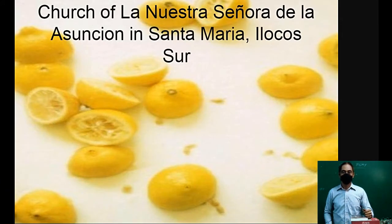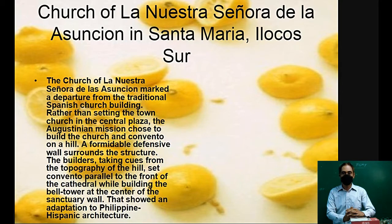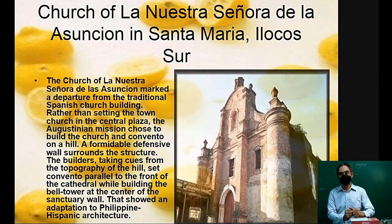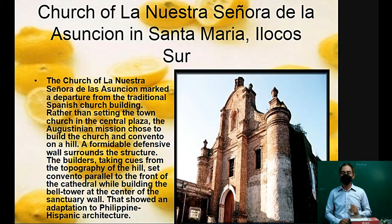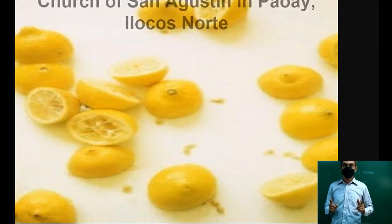The Church of La Nuestra Señora de la Asuncion in Santa Maria, Ilocos Sur, marked a departure from the traditional Spanish church building. Rather than sitting in the town's central plaza, the Augustinian mission chose to build the church and convento on a hill. A formidable defensive wall surrounds the structure, with the builders taking cues from the topography of the hill. This is another Baroque church — La Nuestra Señora de la Asuncion in Santa Maria, Ilocos Sur.